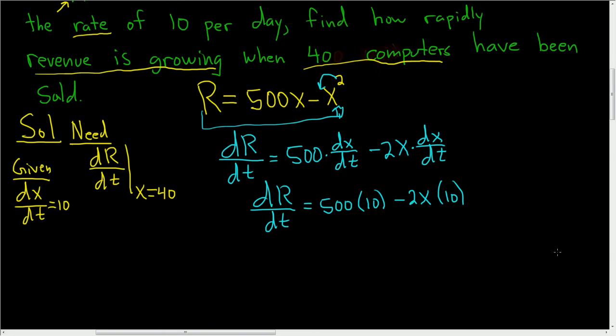Let's keep going and clean this up. So dR/dt, the rate of change of the revenue with respect to time, is equal to 500 times 10 is 5,000, minus, and 2 times 10 is 20, so we get minus 20X.